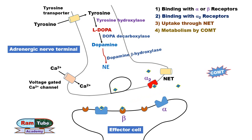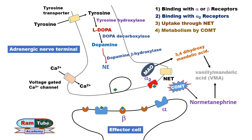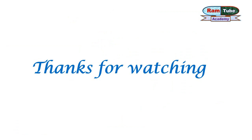Fourth, norepinephrine gets inactivated by the enzyme catechol-O-methyltransferase (COMT). Inside the cytoplasm of the neuron, another enzyme — monoamine oxidase (MAO) — metabolizes norepinephrine into 3,4-dihydroxymandelic acid. These two metabolites then undergo further reactions to form vanillylmandelic acid (VMA), the major metabolite excreted in the urine.